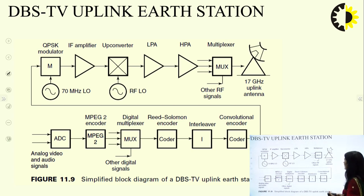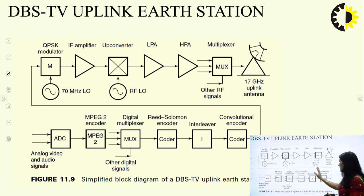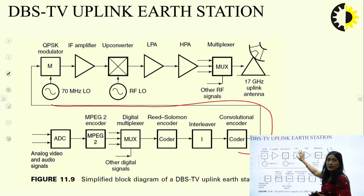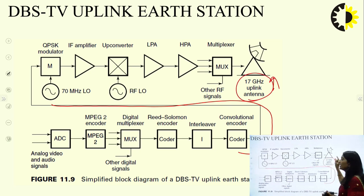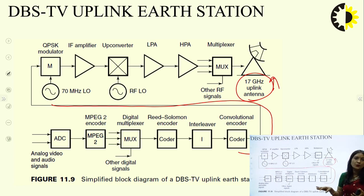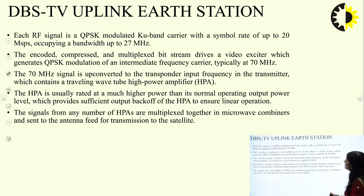The DBS TV uplink earth station processes signal from the earth station to the satellite. It takes the analog-to-digital video signal, passes it through an MPEG2 encoder, then a multiplexer, Reed Solomon encoder, interleaver, and convolutional encoder. Then it uses a QPSK modulator, IF amplifier, upconverter, low power amplifier, high power amplifier, multiplexer, and a 17 gigahertz uplink antenna used in DBS TV. This whole process is done at the main earth station — controlled by your service provider — from where the signal is transmitted and broadcast.